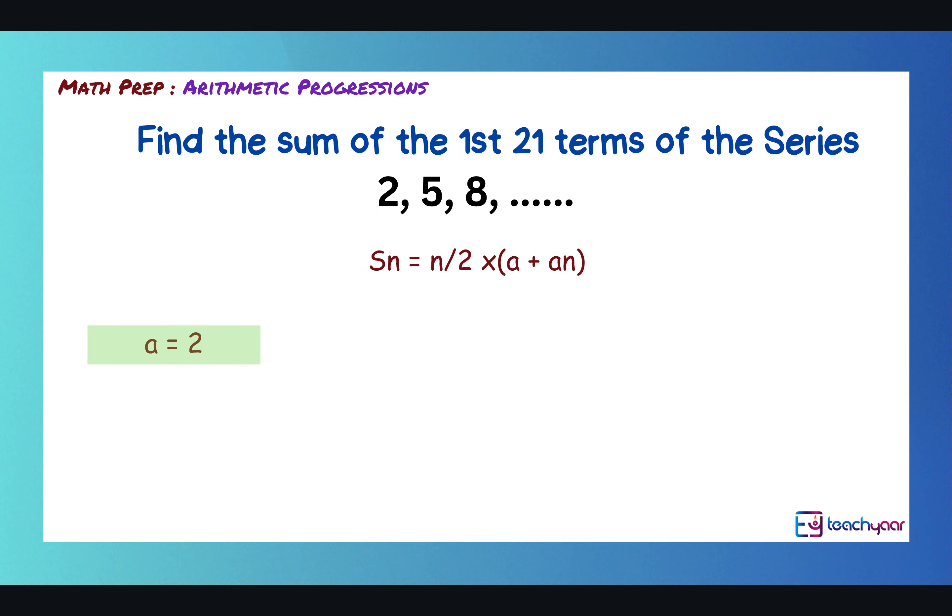So, a is 2. The common difference is 5 minus 2 is 3. We also, just to check, 8 minus 5 is 3. So, the common difference is 3.